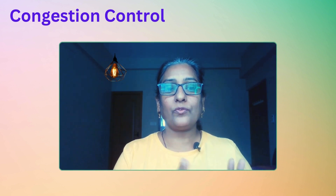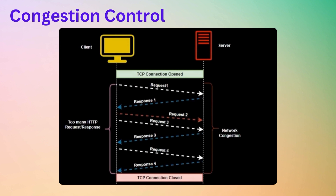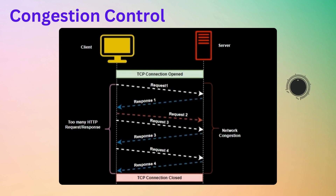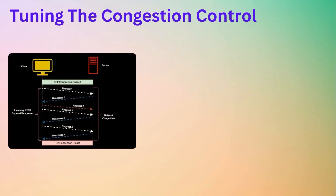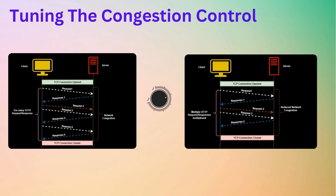Congestion control is a fundamental aspect of networking protocols to ensure that data is transmitted efficiently without causing network congestion. Congestion control algorithms determine how a sender adjusts its rate of data transmission based on network conditions. HTTP3 enables the changing or tuning of these congestion control mechanisms. For example, imagine a network that encounters occasional congestion during peak usage hours. HTTP3 allows fine-tuning of congestion control algorithms, enabling the protocol to intelligently adjust the rate of data transmission based on network conditions — ensuring optimal performance even in varying congestion scenarios.